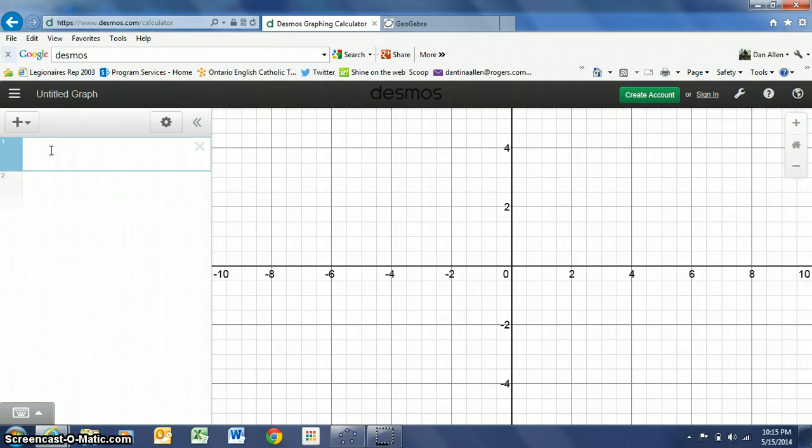So for example, in grade 10 applied math we'd want to be talking about linear graphs. I might punch in y equals, I don't know, 2x minus 5, and when I do that you'll notice over here in my graph pane I have the graph showing up.